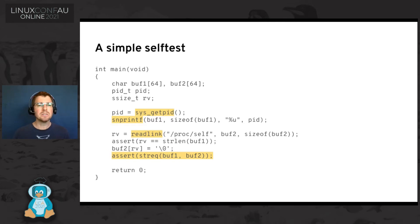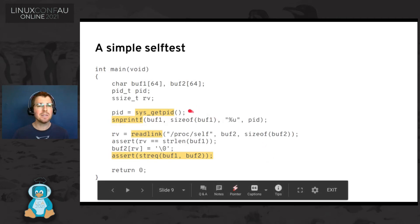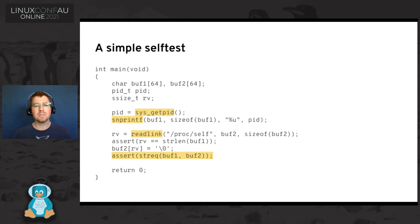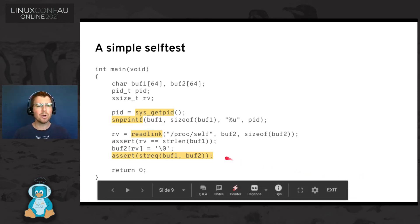Here's an example of a simple, real self-test. It sounds scary that you're writing a self-test for the kernel, but it doesn't have to be — it can be really quite simple. This one only has two syscalls that are part of the test itself: getpid and readlink. What this test does is get the PID of the current process, print that into a buffer, and then do readlink on /proc/self. Proc/self is a symlink, and readlink gives you the content of that symlink — the PID of the process — and then the test asserts that the PID from readlink matches the PID from getpid.